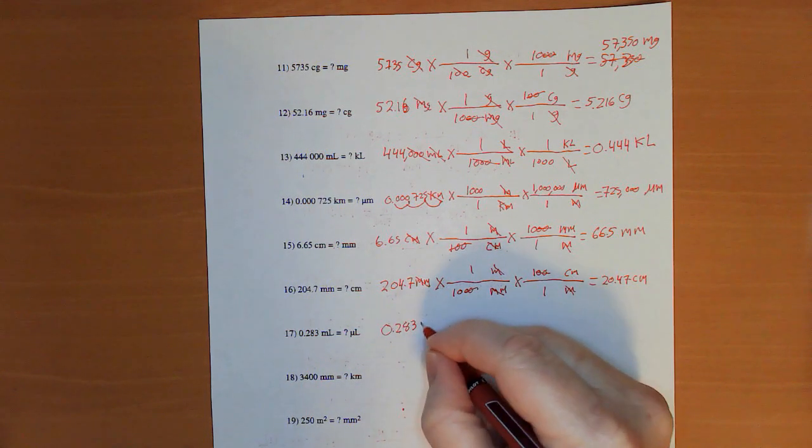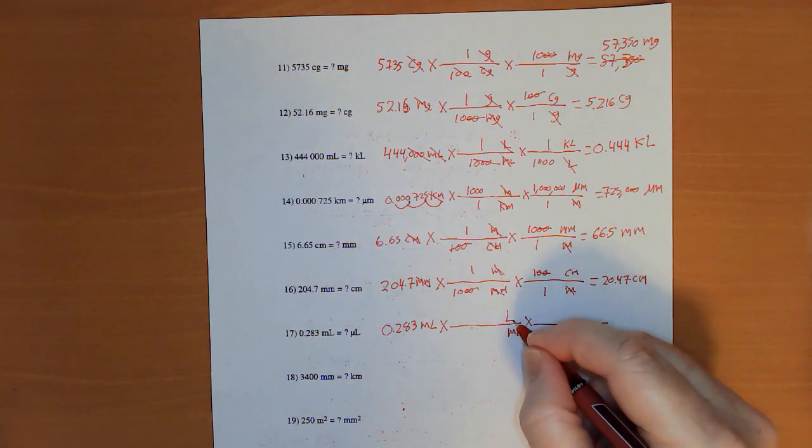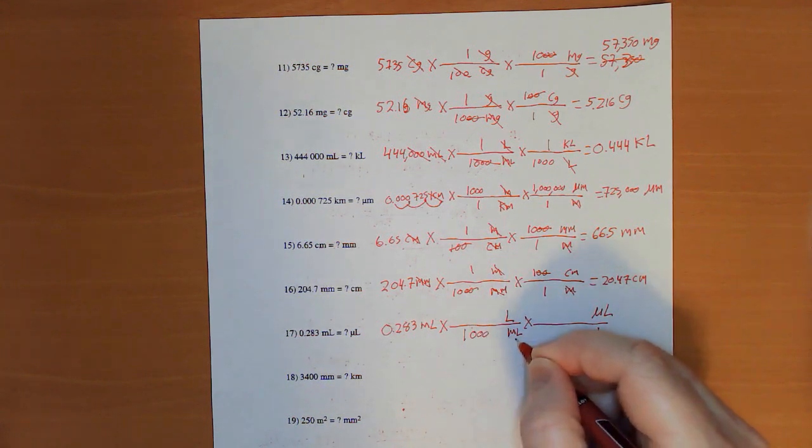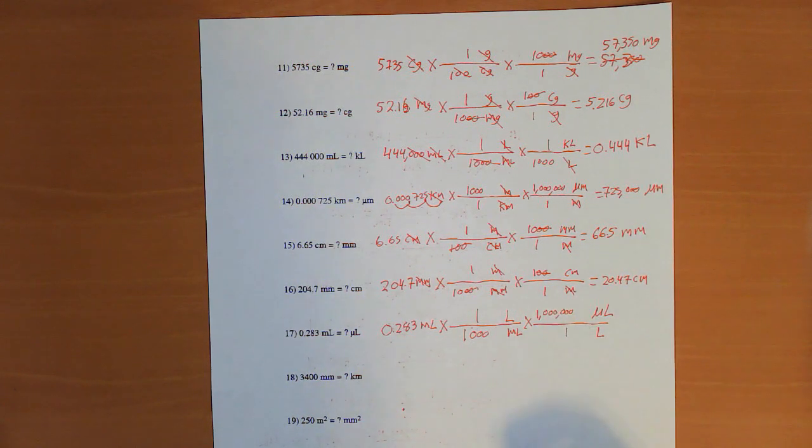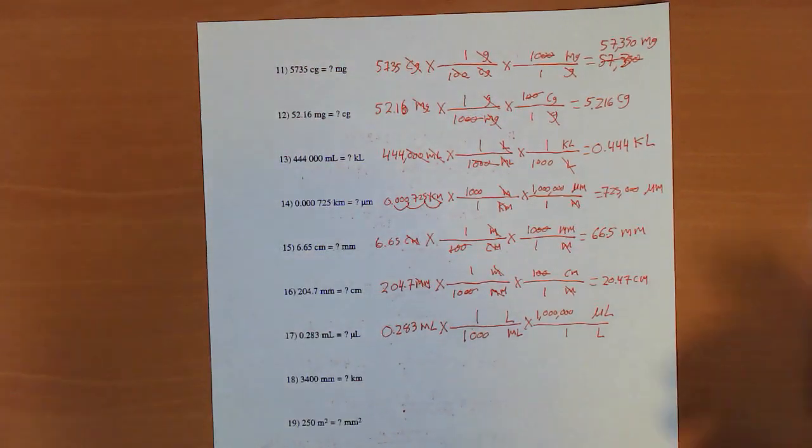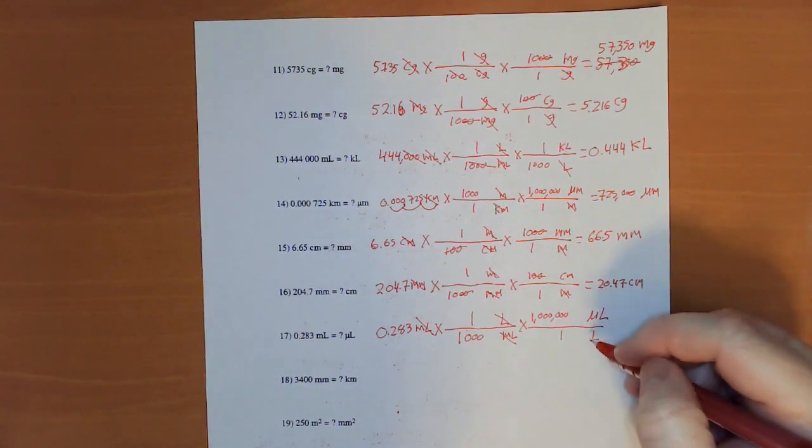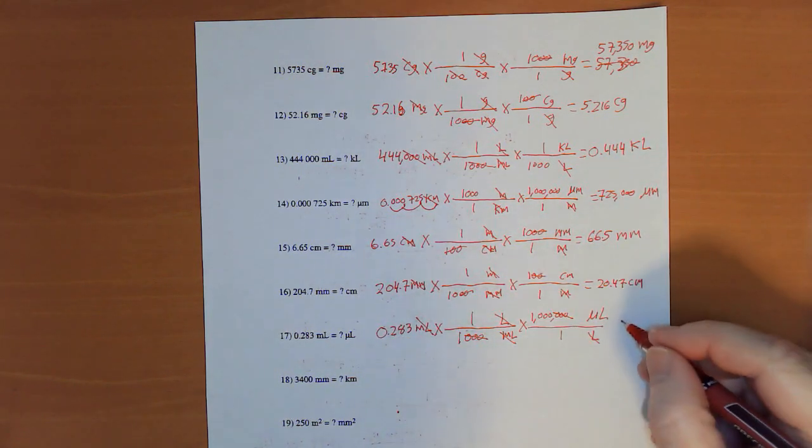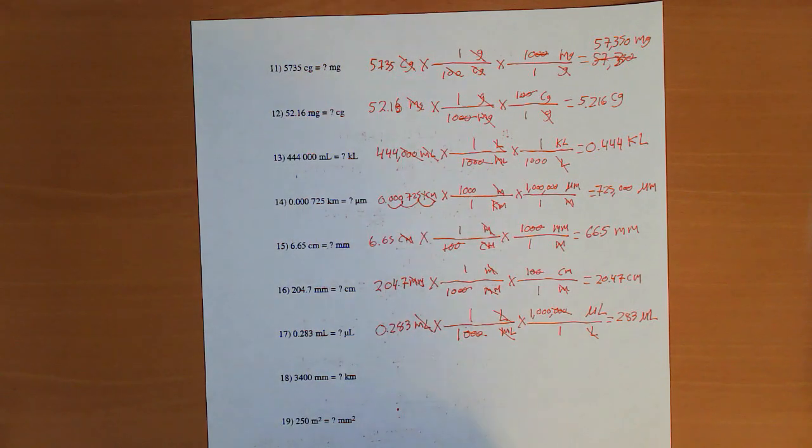0.283 milliliters. Times. Times. Milliliters to liters. Leaders to microliters. 1,000 milliliters to one liter. One liter has 1,000,000 microliters. And I've got this very convenient chart. Just sitting next to me. So I can just keep looking over at it every single time. Now. Milliliter cancels milliliter. And liter cancels liter. And those three zeros cancel those three zeros. So I have .283 times 1,000. Or this equals 283 microliters.